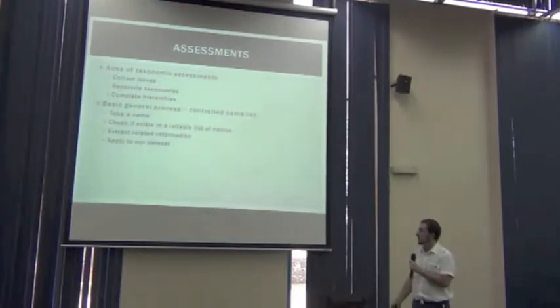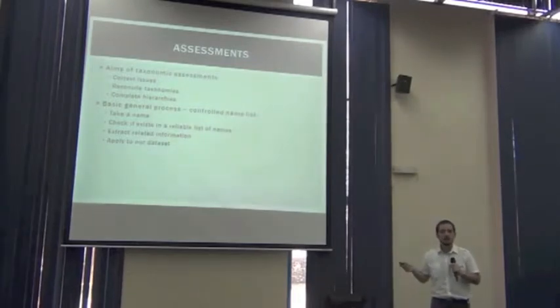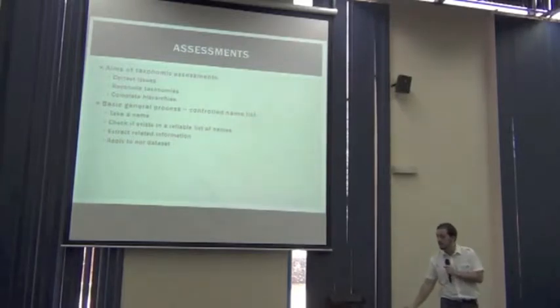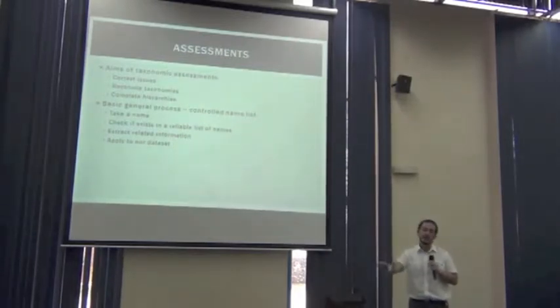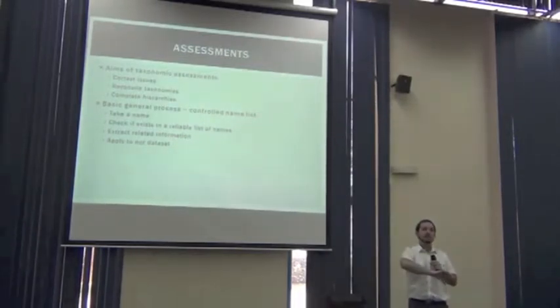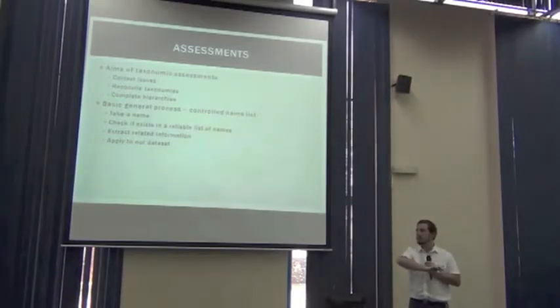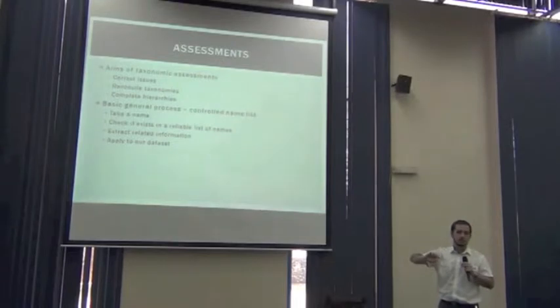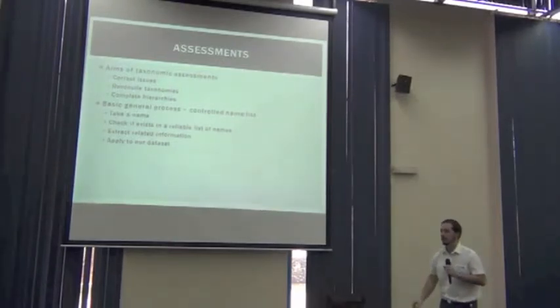The basic general process requires the use of controlled vocabulary, controlled name lists, and the process would be something like checking the name, checking the list if that name exists, extracting the related information from the authoritative source, and then apply the needed changes.